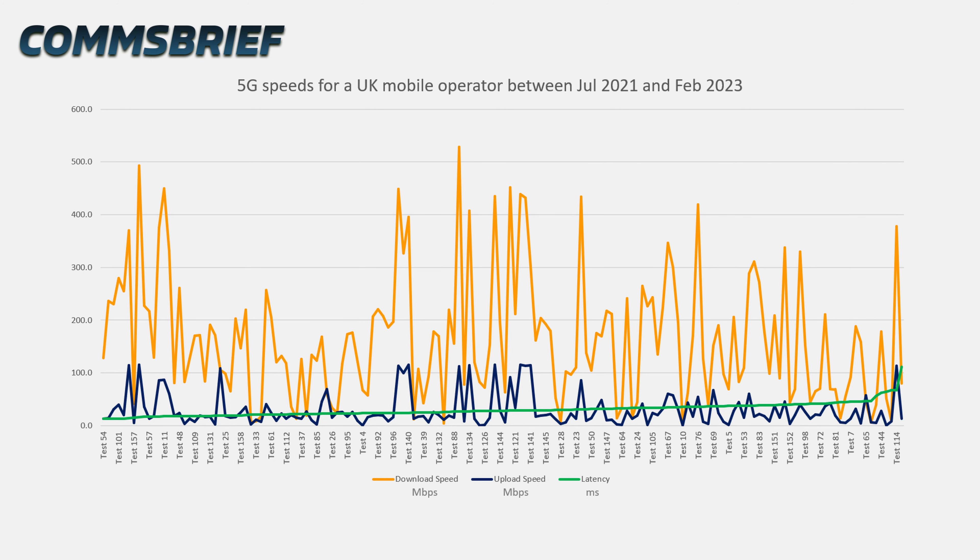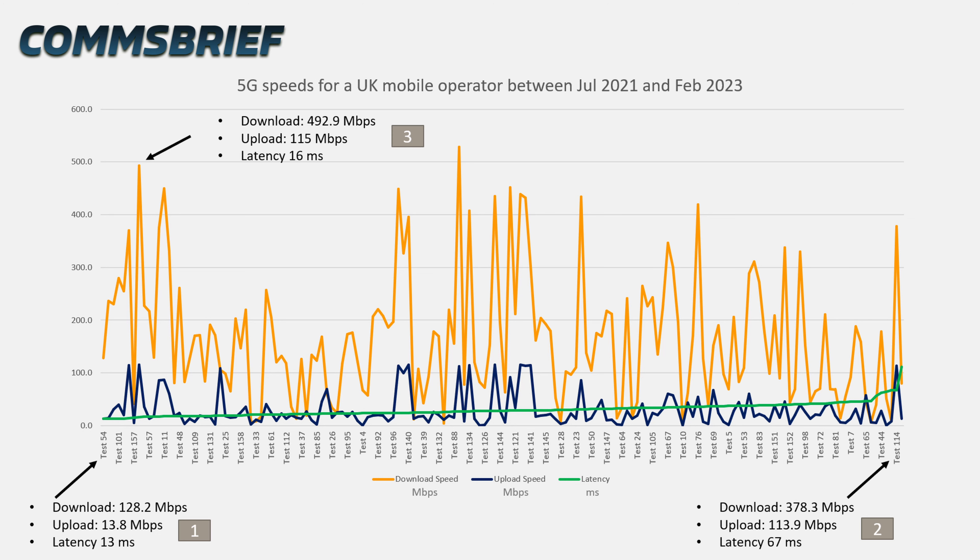Let's have a look at this slide showing some 5G speed tests. These are 5G speeds for one of the UK's largest mobile operators, with tests carried out between July 2021 and February 2023. The data is sorted such that the lowest latencies are on the left side and the highest latencies are on the right side. Let's look at three readings marked as 1, 2, and 3.